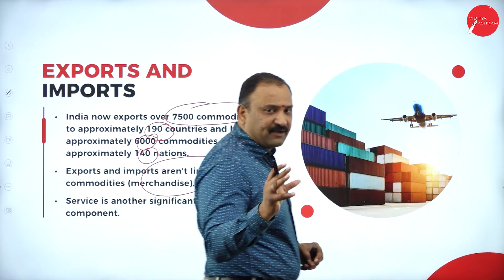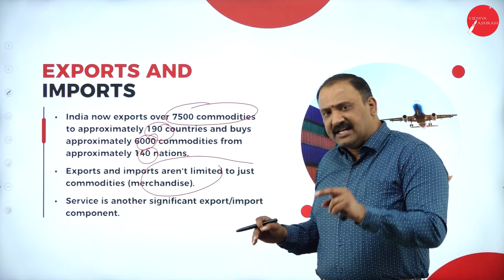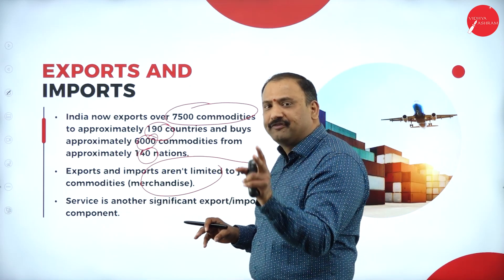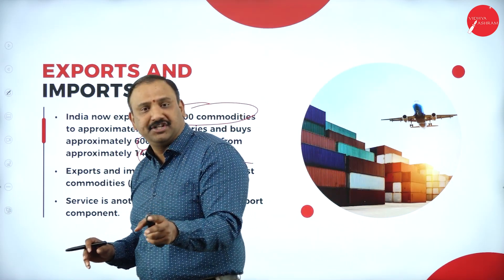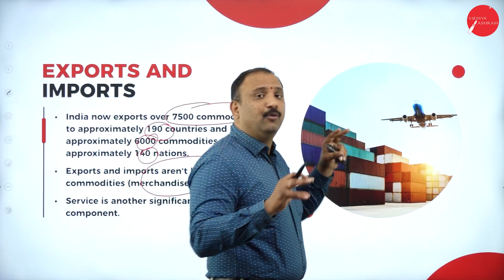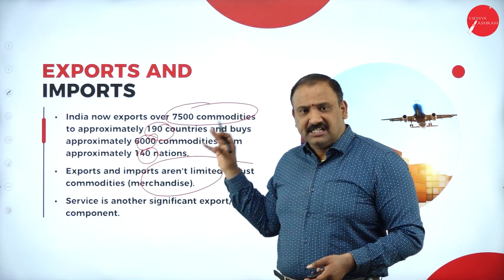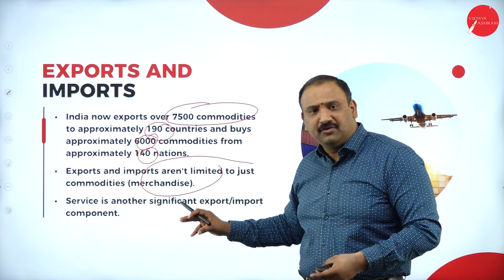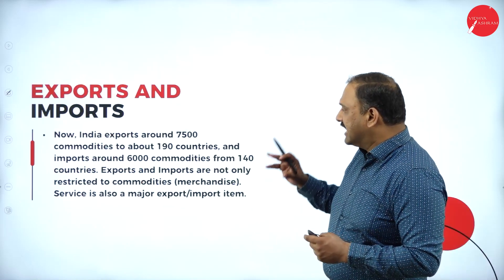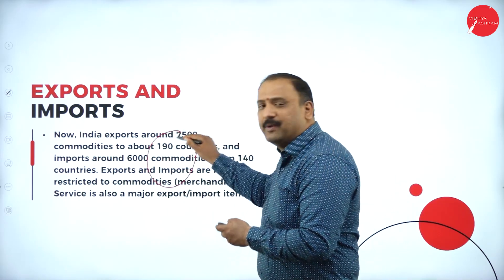When we talk about the word foreign trade, you will be surprised to see that we have been working on creating bilateral relationships between many countries across the globe, and that's what has made us the world's number one trading nation. The numbers — 7,500 commodities and 190 countries — show how we are expanding, and services are also coming up in a very big way.